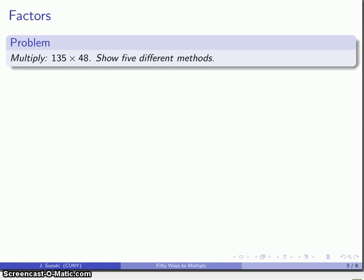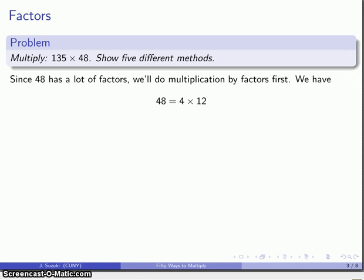So the first observation I might make here is that 48 is actually a number that has a whole bunch of different factors. So maybe I want to do multiplication by factors and using the associative property. So let's see, 48 is 4 times 12, so that's a good place to start.